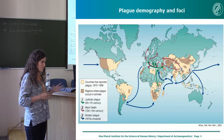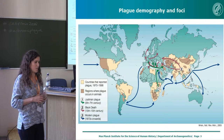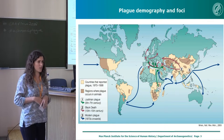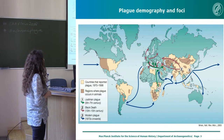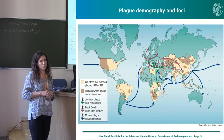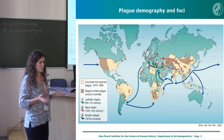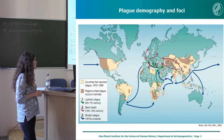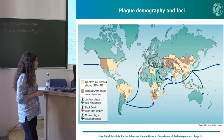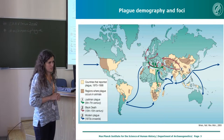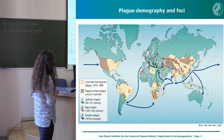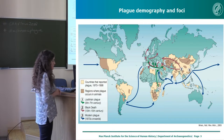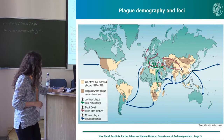The first plague pandemic occurred between the 6th and 8th centuries AD. The second plague pandemic occurred between the 14th and 18th centuries, and this will be the main topic of my talk today. The third plague pandemic has mostly left descendants around the world today, for example the foci in Madagascar and in the Americas.